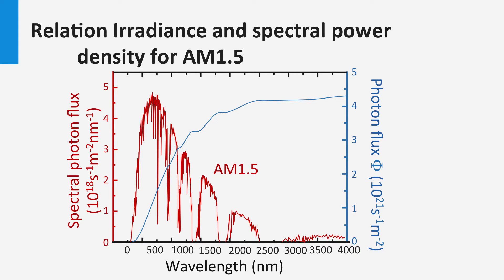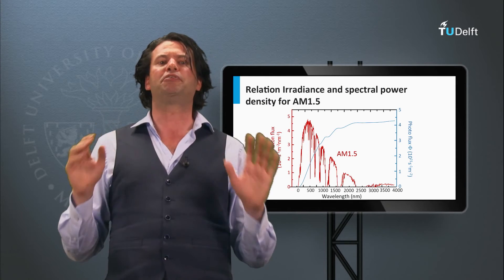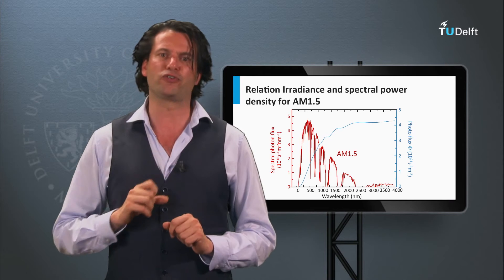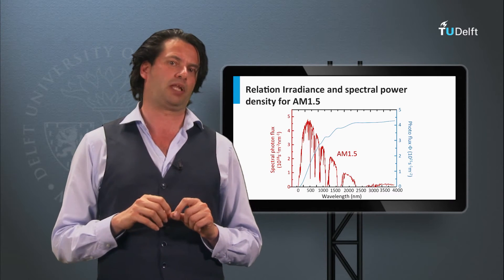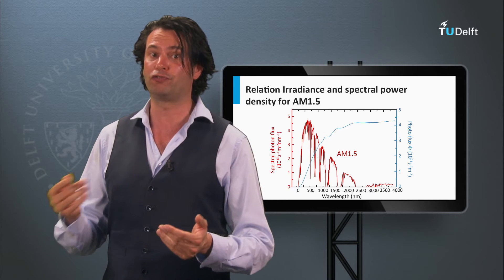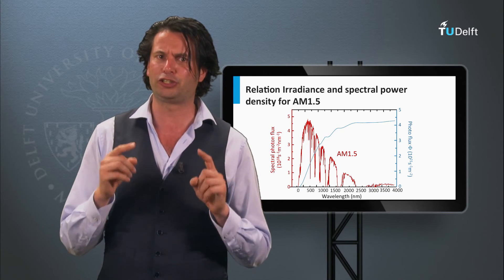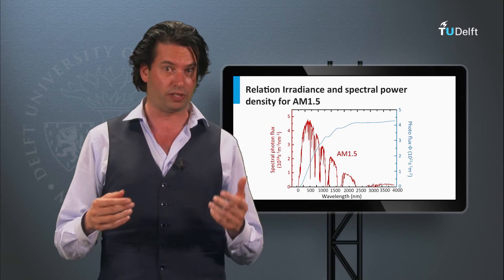The spectral photon flux of the AM 1.5 spectrum is plotted, and the area under this graph represents the photon flux. The blue line shows the photon flux up to wavelength lambda. Up to 4000 nanometers, the AM 1.5 spectrum has a photon flux of 4.3 × 10²¹ photons per second per square meter. Since every photon can result in one collected charge carrier, the photon flux of the solar spectrum theoretically determines the maximum current per area we can generate with a solar cell.